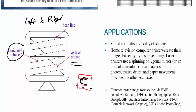Finally, some examples and applications: raster scan is suitable for realistic displays of screens. It is used in home televisions and computer printers, which print images by raster scanning. Laser printers also follow this mechanism. Common file formats associated with raster images include BMP, JPG, PNG, and others. That was all about raster scan display.